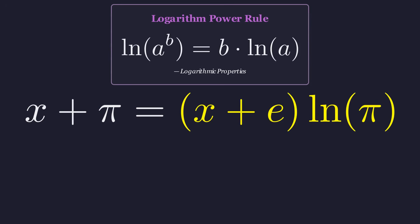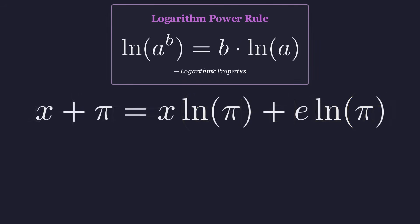On the right side, our next step is to distribute the natural logarithm of pi across the terms in the parentheses. Doing so gives us x times the natural logarithm of pi plus e times the natural logarithm of pi.